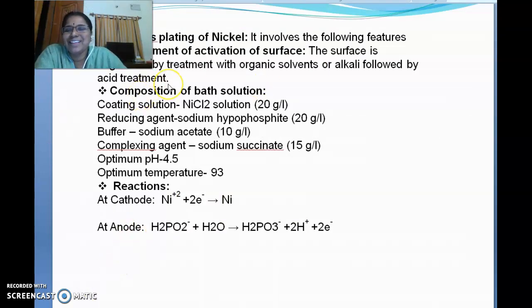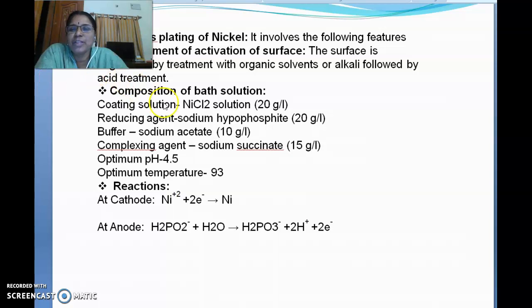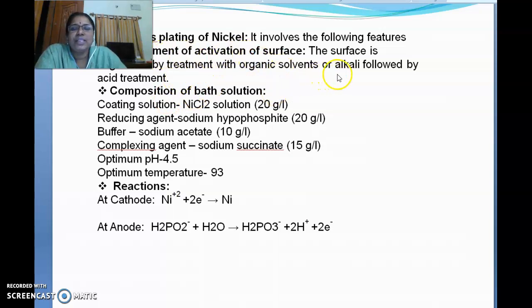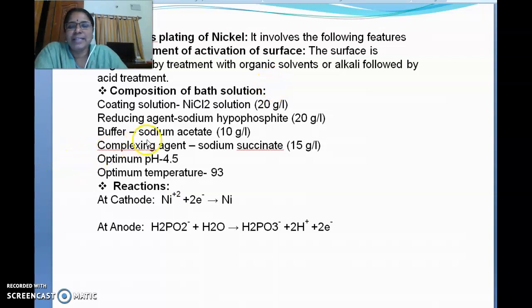This is the last topic of Unit 3. This is the electroless plating of nickel. Till here we have observed many methods to prevent or protect from corrosion — inhibitors, good design, purity of metal, modifying the environment, and electroplating. Now we are going to discuss coating without the electrolysis process, that is electroless plating of nickel. It is compulsory that pre-treatment or activation is done — the article must be free from all impurities through solvent or acid treatment.